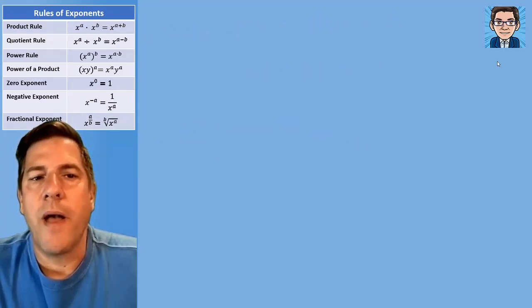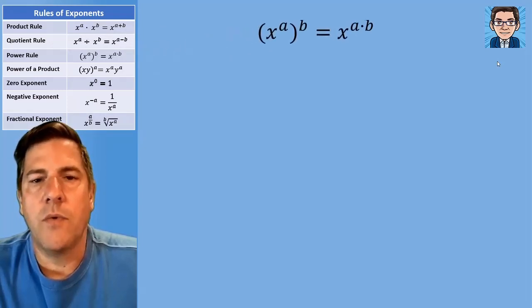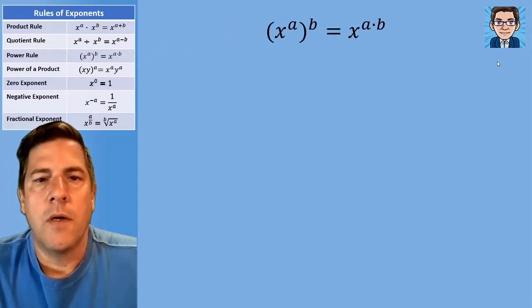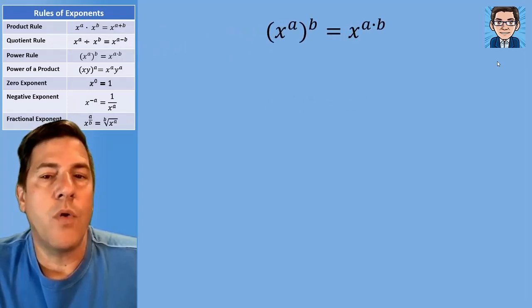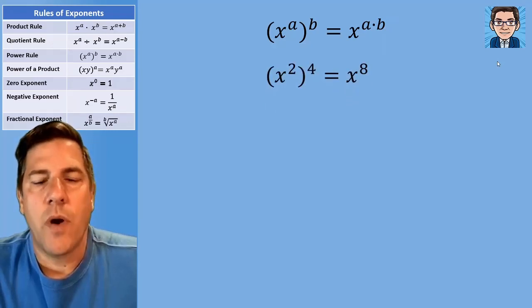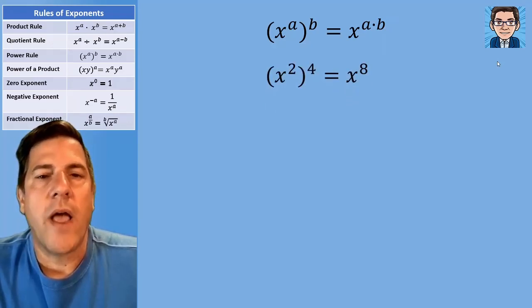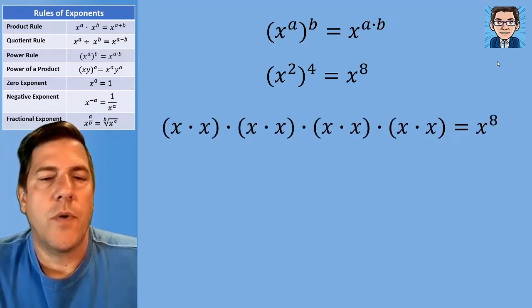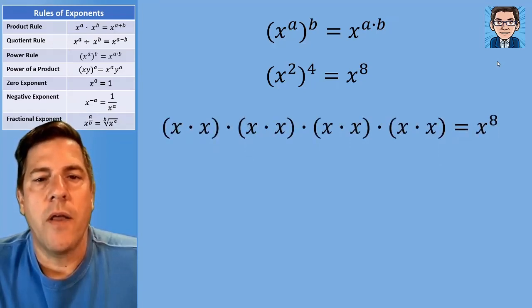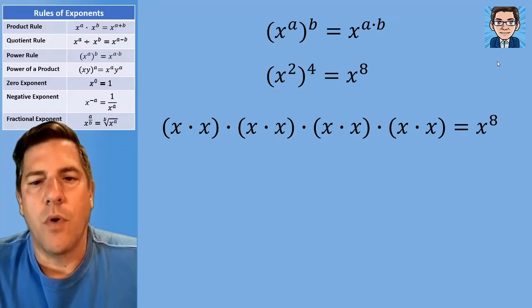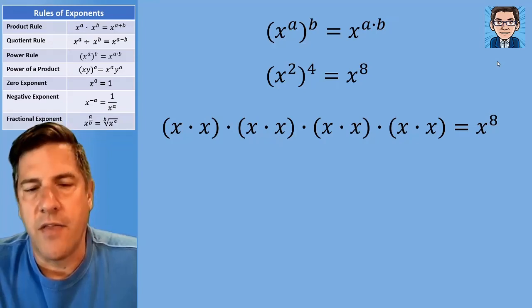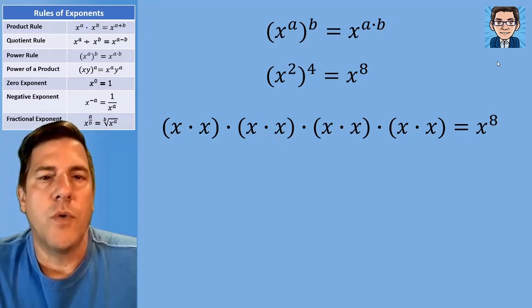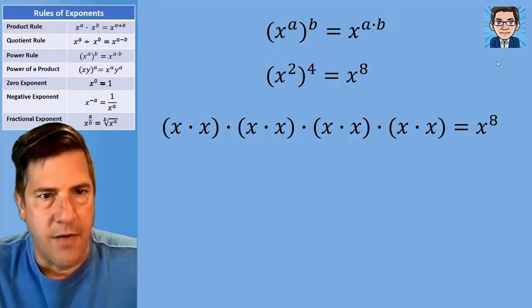When we raise to a power, we're going to end up multiplying. So x squared to the fourth is going to be two times four, or x to the eighth. Visually, we've got x squared and we're multiplying it together four times, so we do two times four to get the total number of times we're multiplying — eight.